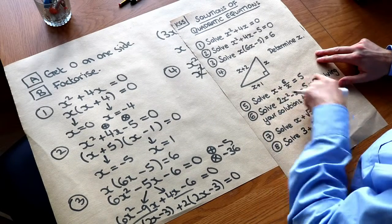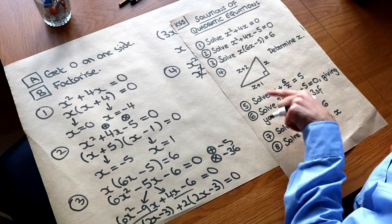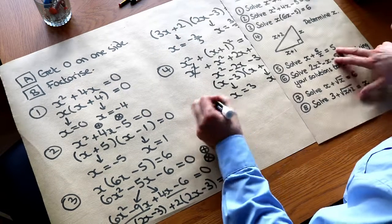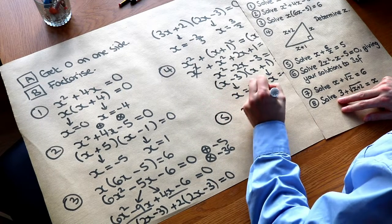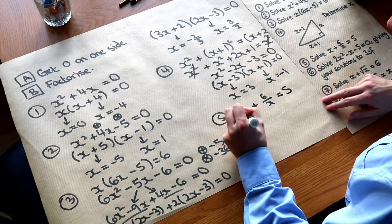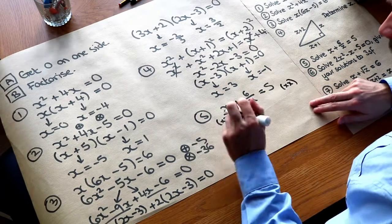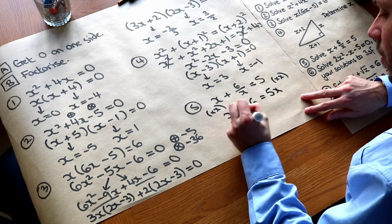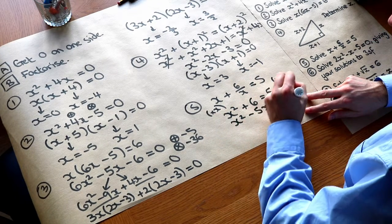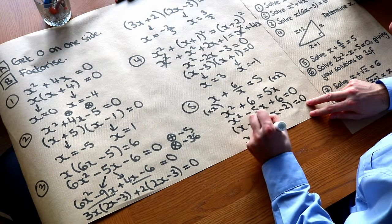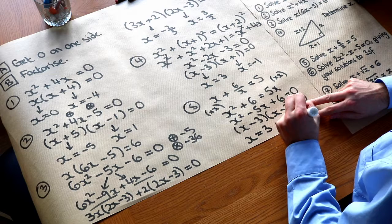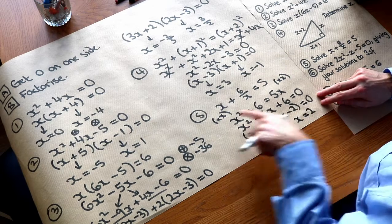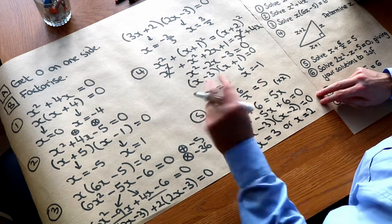Question 5 has a fraction in the equation, so we multiply everything by the denominator x. Multiplying both sides by x gives x squared plus 6 equals 5x. Rearranging to get zero on one side: x squared minus 5x plus 6 equals 0. Factorising gives solutions x equals 3 or x equals 2. Checking: if x is 3, then 3 plus 6 over 3 equals 3 plus 2 equals 5. If x is 2, then 2 plus 6 over 2 equals 2 plus 3 equals 5. Both solutions verified.